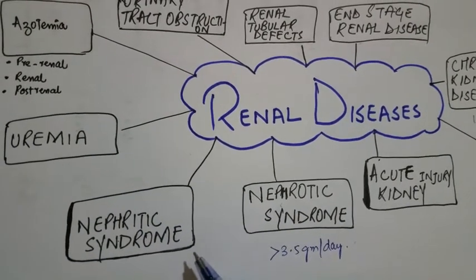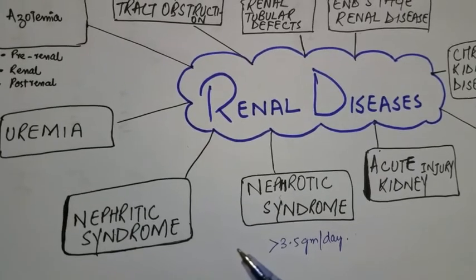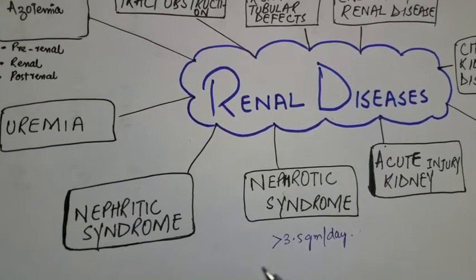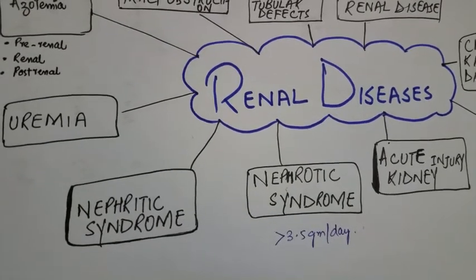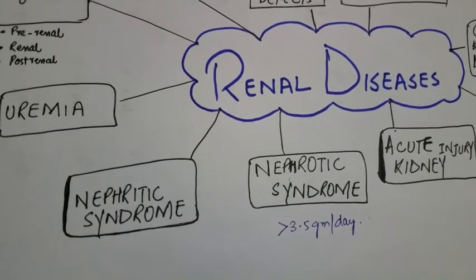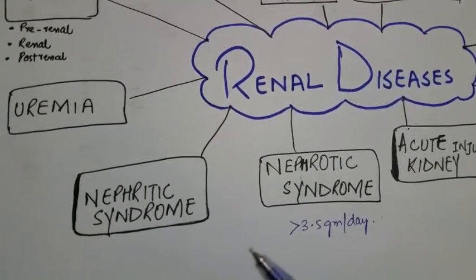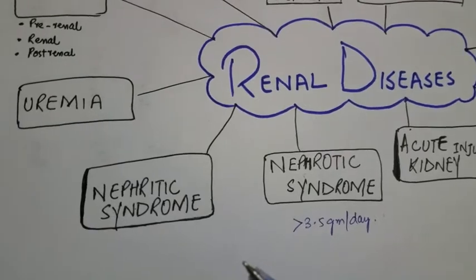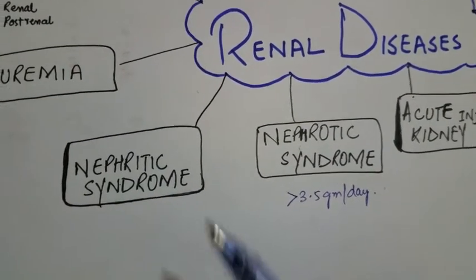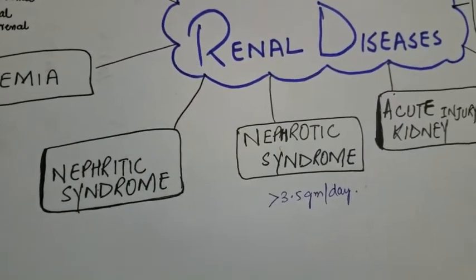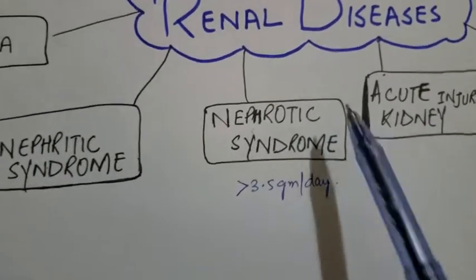Nephritic syndrome is a renal disease manifested by grossly visible hematuria, microscopic dysmorphic hematuria, moderate proteinuria, and hypertension. It is basically due to post-streptococcal glomerulonephritis.